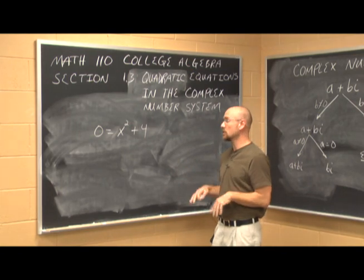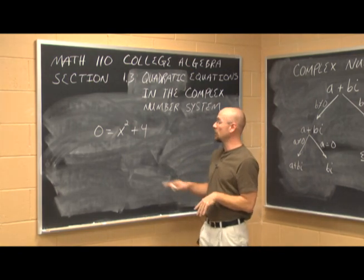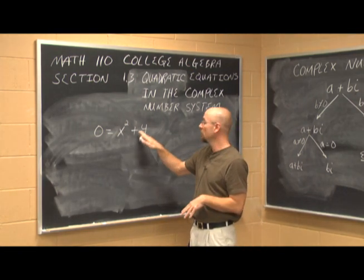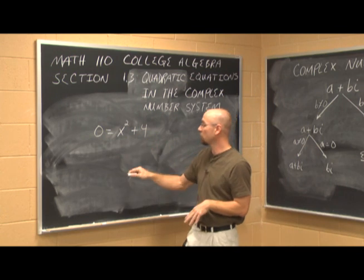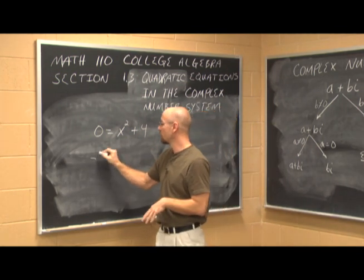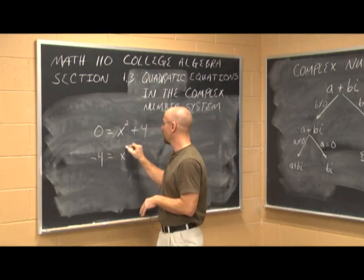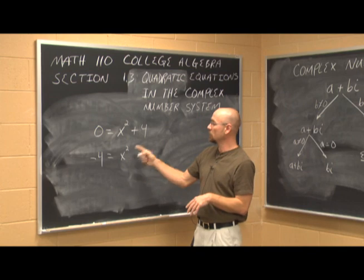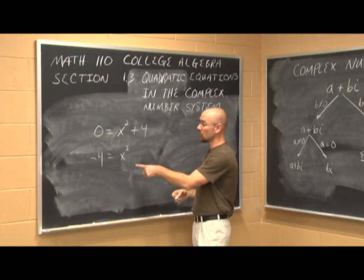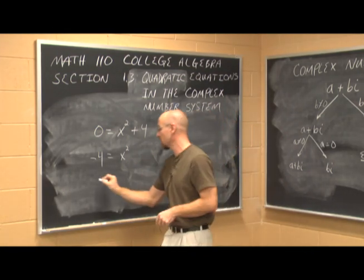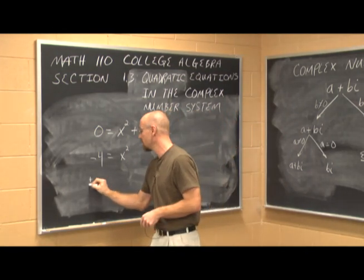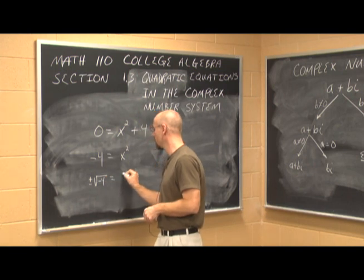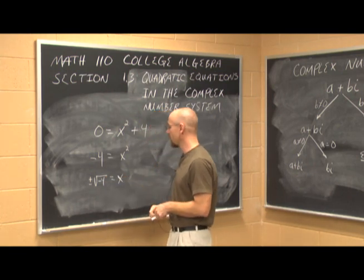Let's try another method: the square root method. We can isolate the perfect squared term, subtract 4 from both sides, and get x² = -4. Taking the square root of both sides gives plus or minus the square root of negative 4 equals x.